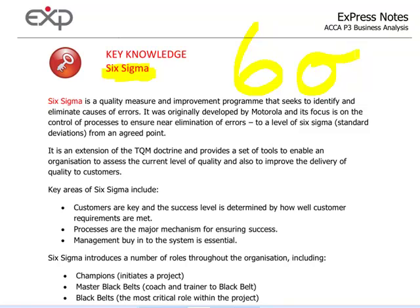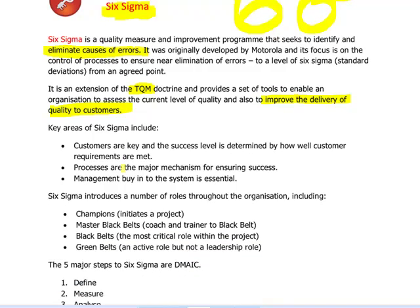Let's go through this in more detail. If you look at your notes, Six Sigma is a quality measure that seeks to identify and eliminate causes of error. It is important — it is trying to eliminate the causes — so it is all about getting the processes right. It is an extension of the TQM doctrine. TQM, as you may remember from previous videos, is total quality management. The aim is to improve the delivery of quality to customers. Six Sigma was originally developed by Motorola in the early 1980s, and the overall aim is to eliminate causes of errors and ultimately improve the delivery of quality to customers.